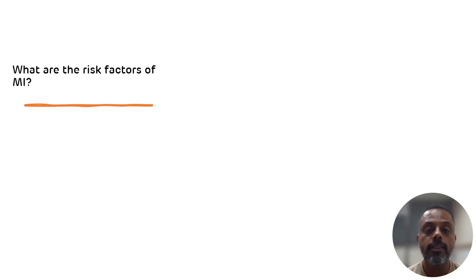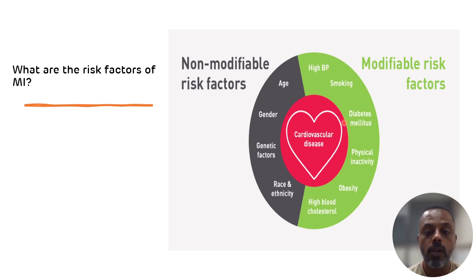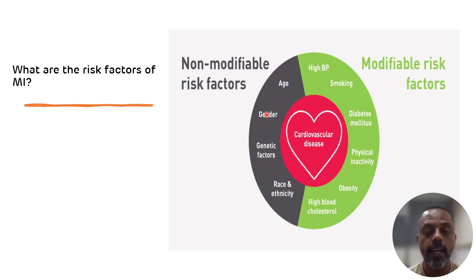The last question: what are the risk factors for MI? Risk factors are divided into two categories: modifiable and non-modifiable. Modifiable risk factors include high BP, smoking, diabetes mellitus, physical inactivity, obesity, and high blood cholesterol or dyslipidemia. From this case, the patient had hypertension, was smoking for past 30 years, had diabetes mellitus, and was a banker, indicating physical inactivity. Non-modifiable risk factors include age (MI is more common above 50 years), gender (more common in males because estradiol plays a protective role in females), and genetic factors and race/ethnicity.